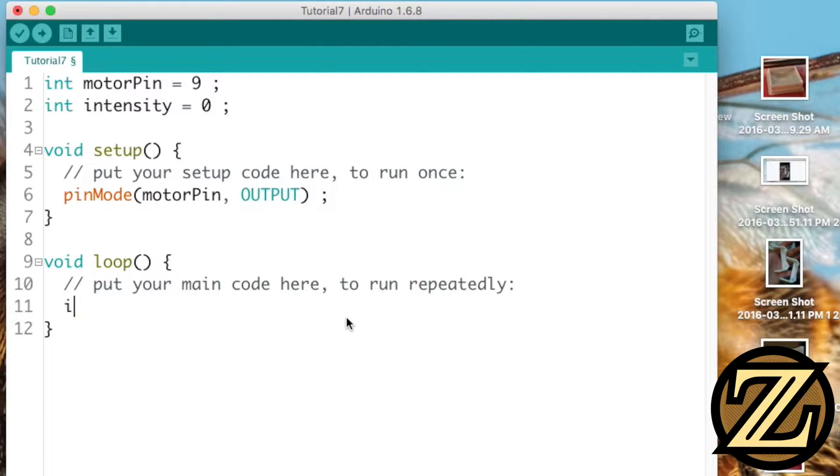In our loop we're going to increment our intensity value by 1 and then we're going to evaluate our intensity value and check whether or not it is greater than 255. If it is we're going to set our intensity value to be equal to zero.